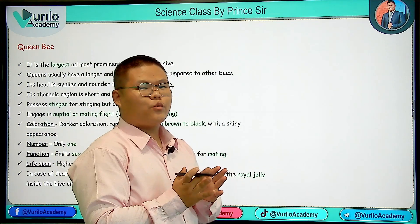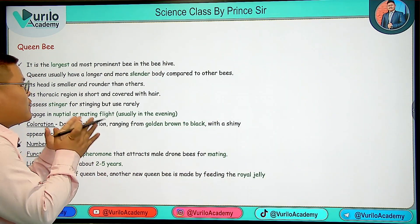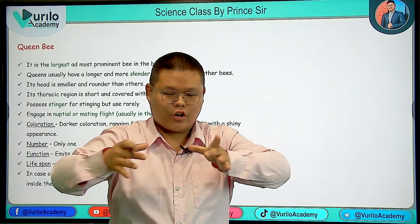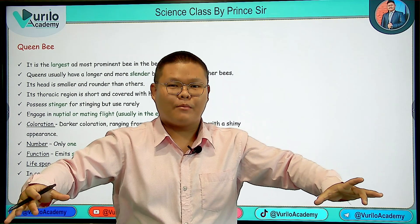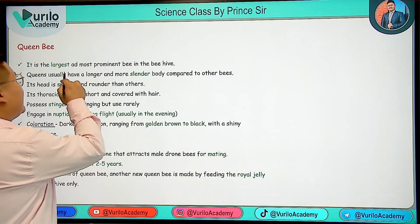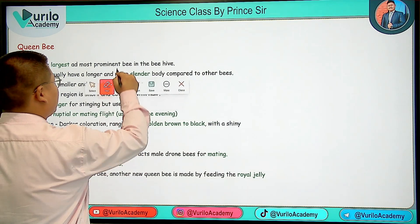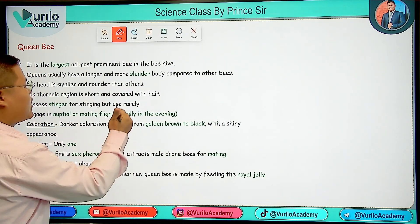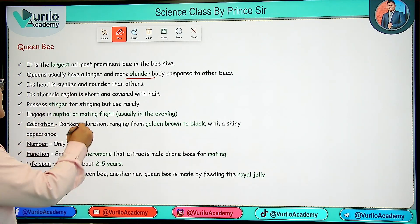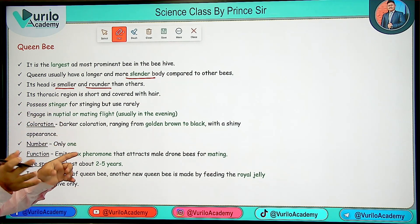Queen Bee is the largest and longest bee. The body is slender. The head is the largest and most prominent. The body of the queen is slender.